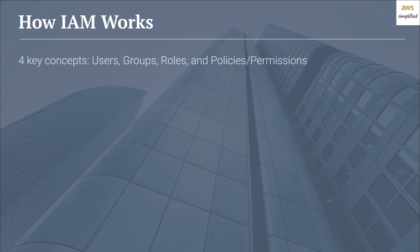There are four key concepts that you need to be aware of when using IAM: users, groups, roles, and policies — also called permissions. Policies are the official name, but they're sometimes referred to as permissions. Let's go through each of these one by one.